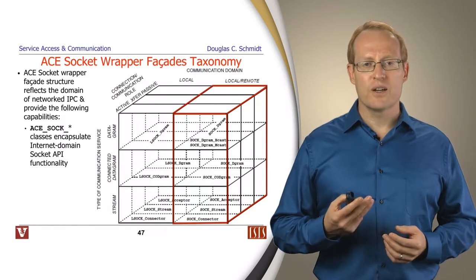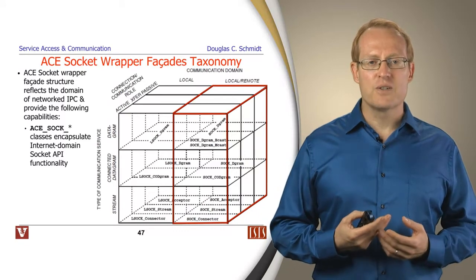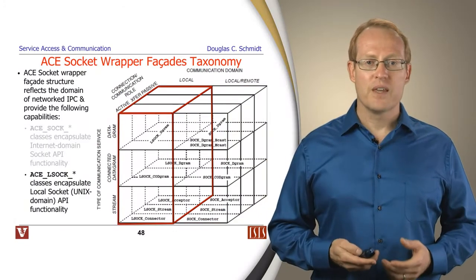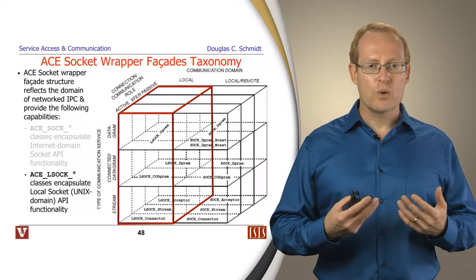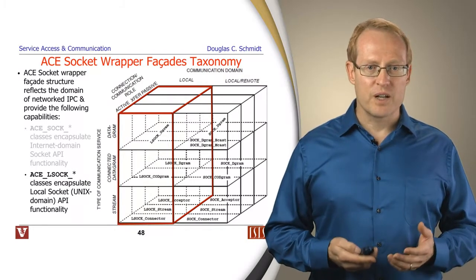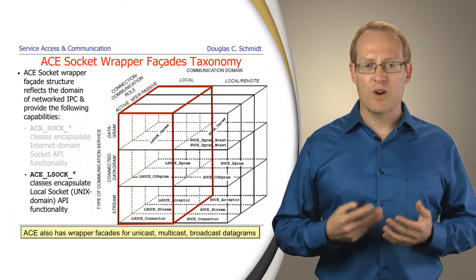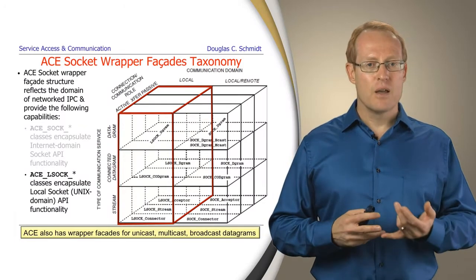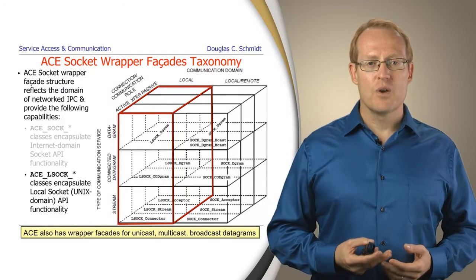As a simple example of this, if you take a look at the wrapper facades, you'll see that we have a set of classes that are called the SOCK classes. And these are the ones that embody the internet communication domain. There's a separate set of classes called the LSOCK classes, and they embody the local sockets or Unix domain communication. And it's easy again to tell at a glance how these different classes work just by reading the names. ACE also provides many wrapper facades for other kinds of communication that are not as common but are very popular and powerful, things like broadcast, multicast, and various kinds of unicast mechanisms for datagrams as well.